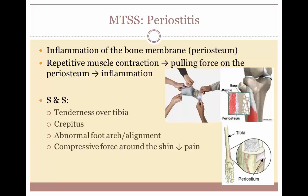Shin splints can also be caused by periostitis, which is an inflammation of the bone membrane known as the periosteum. Periostitis is caused by repetitive muscle contractions creating a pulling force on the periosteum, which then leads to inflammation. Signs and symptoms of periostitis-related medial tibial stress syndrome include tenderness over the tibia, crepitus, and abnormal foot or arch alignment. Compressive forces around the shin help decrease the pain if it is associated with periostitis.